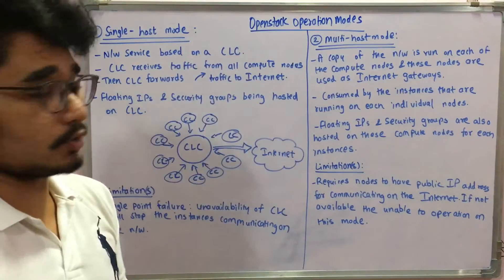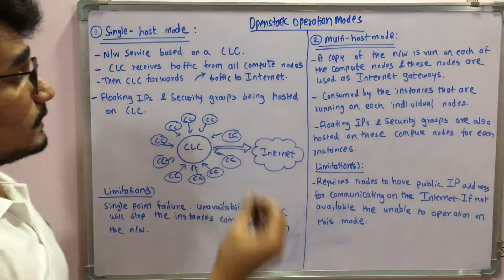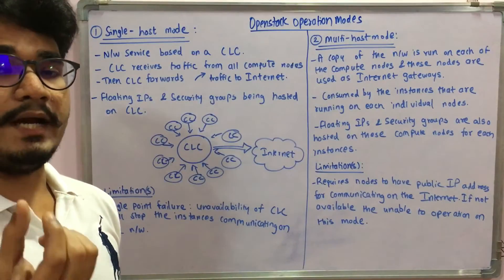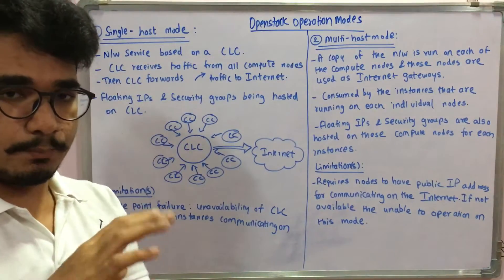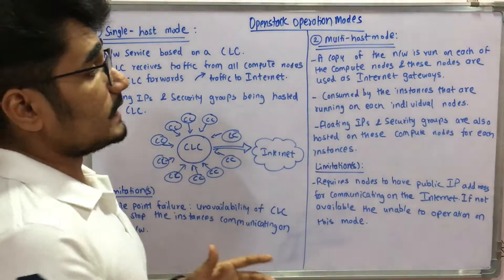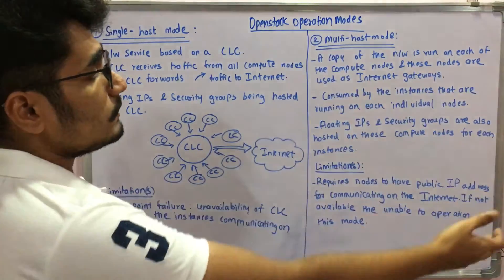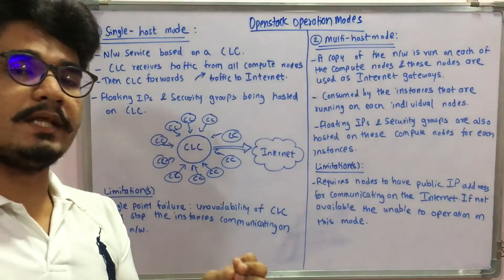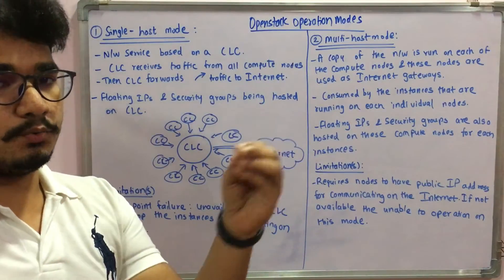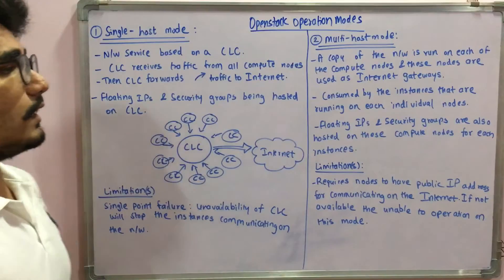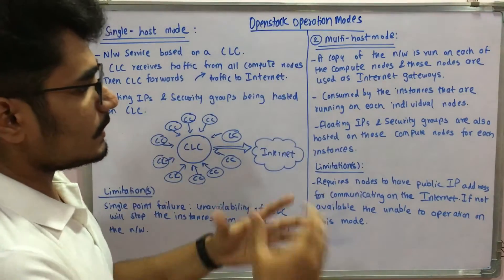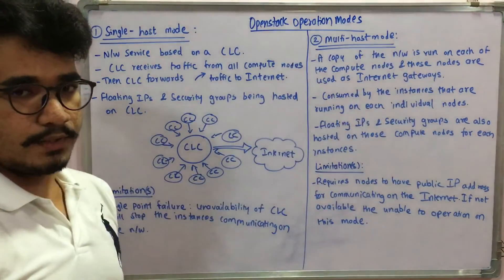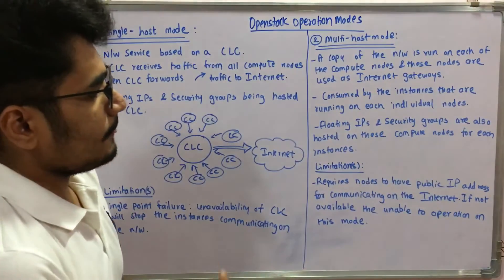To overcome this limitation, there is multi-host mode. In this mode, a copy of the network service is replicated across all available nodes, so a copy runs on each compute node. Each compute node is then used as an internet gateway. Traffic is consumed by the instances running on each individual node and forwarded directly from those nodes.